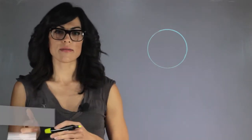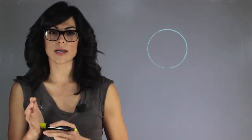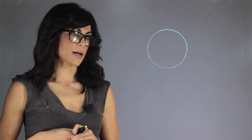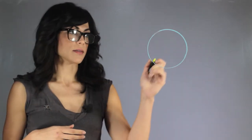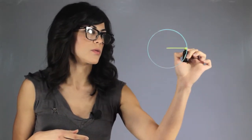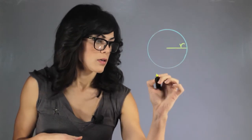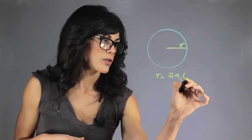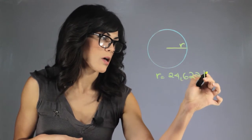So Neptune has 17 times the mass of the Earth. It's fairly massive and it has a radius of 24,622 kilometers.